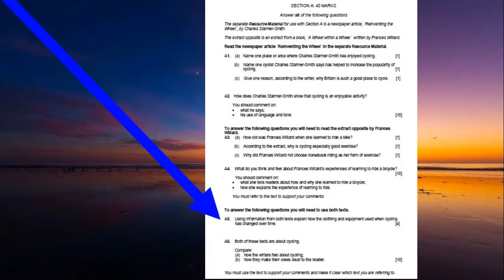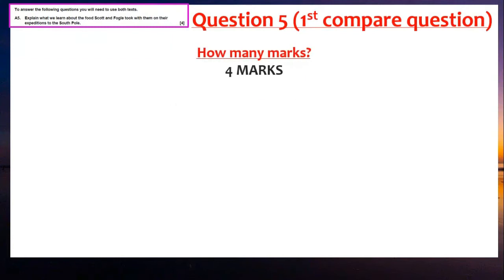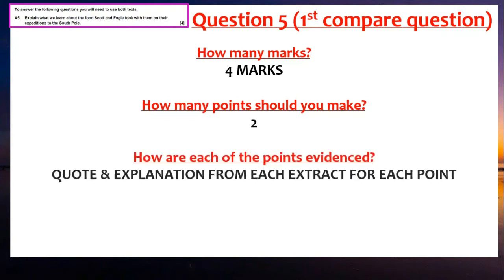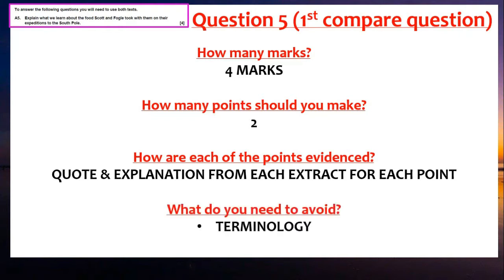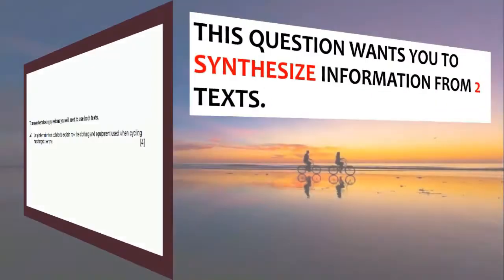Question five is worth four marks. It's the first of two compare questions. You need to make two points, but you need to write two quotes for each point — a quote from each extract. You need to avoid terminology; you don't need to use it, and no lengthy exploration. This is only a four-mark question, so we don't want to spend too much time on it.